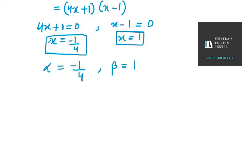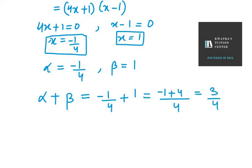So α + β will be minus 1 over 4 plus 1. Taking LCM we get minus 1 plus 4 which equals 3 over 4.